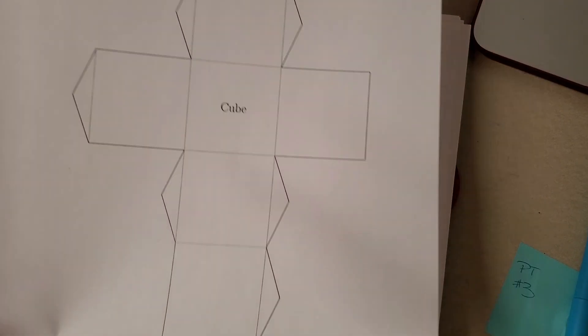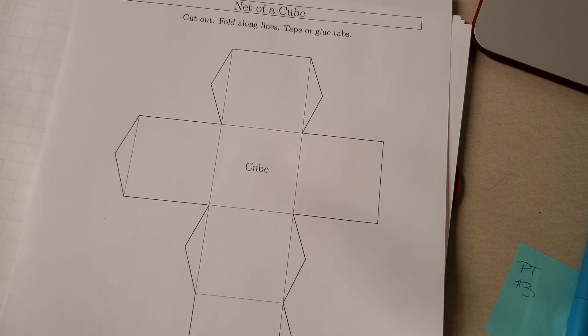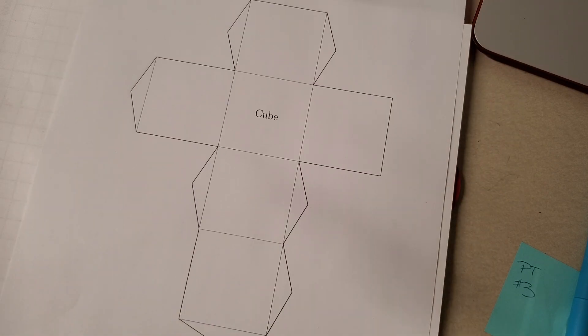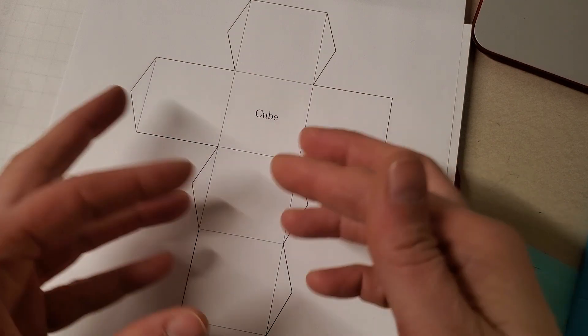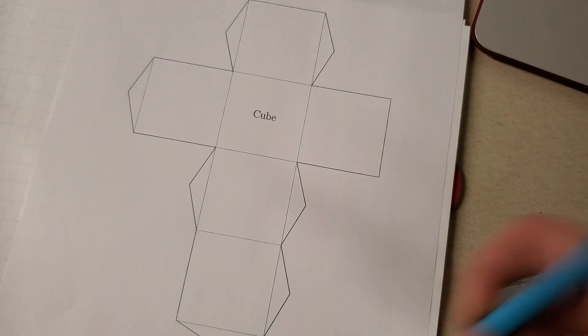Good morning! Let's talk nets, right? So a net is basically like if you took the packaging around a three-dimensional object and cut it all the seams and laid it out flat. That's a net.